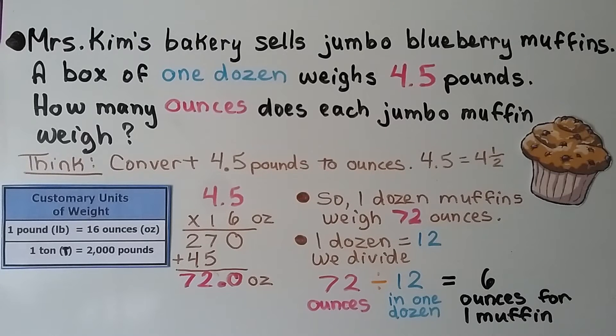And one dozen is equal to 12. And we divide. 72 divided by 12 in one dozen. And we find that it's six ounces for one muffin.